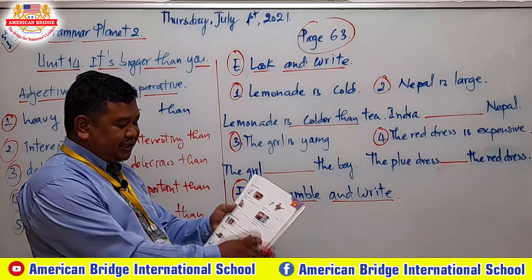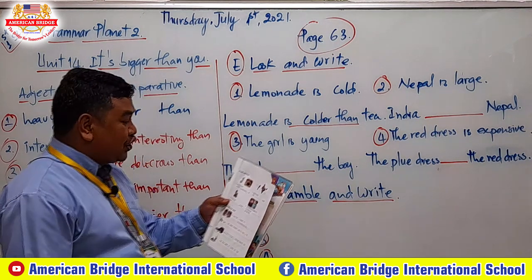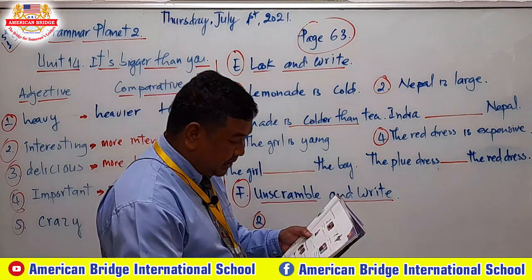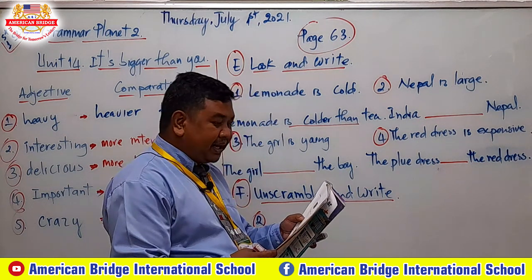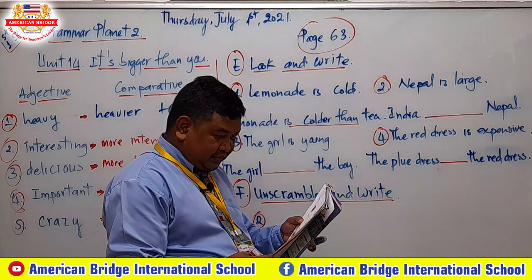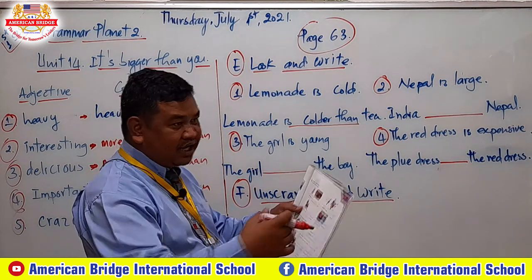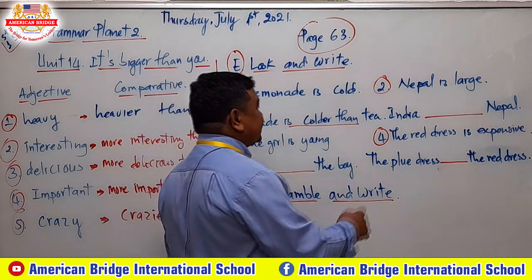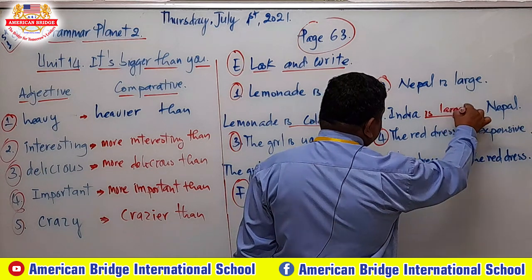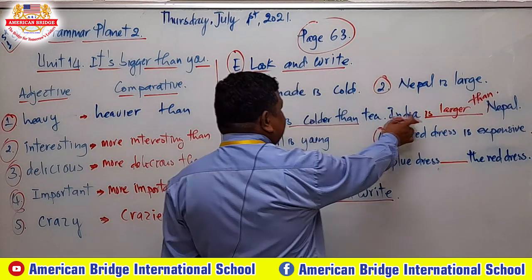In Part E, 'look and write,' can you see the pictures? Lemonade is cold — lemonade is cooler than tea because tea has no ice. For Nepal and India: India is bigger, Nepal is smaller. So India is larger than Nepal. You can write: 'India is larger than Nepal.'